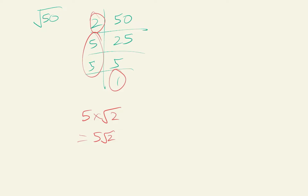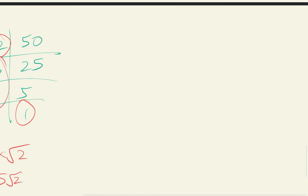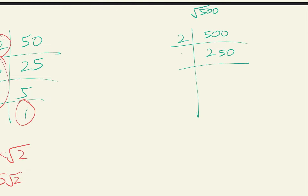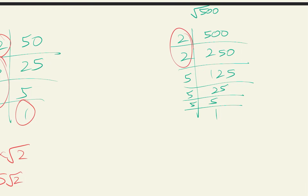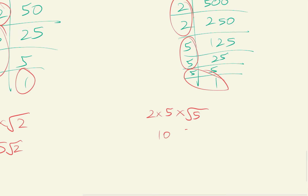Last example: square root 500. Divide by 2 to get 250, divide by 2 to get 125. 125 can't divide by 2, so use 5: 125 divided by 5 is 25, divided by 5 is 5, divided by 5 is 1. One set of 2s and one set of 5s outside, one 5 remaining inside, so we get 2 times 5 times square root 5, which equals 10 square root 5.